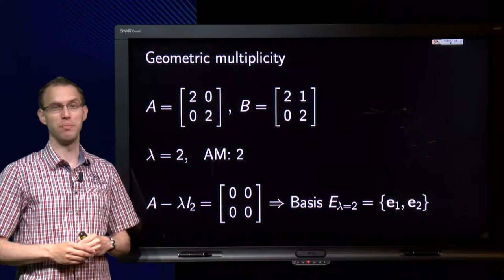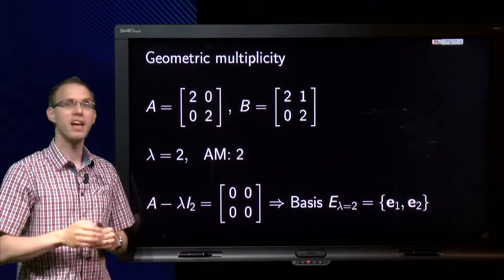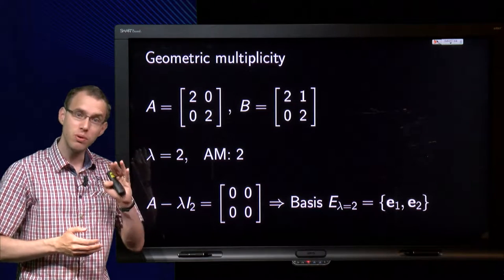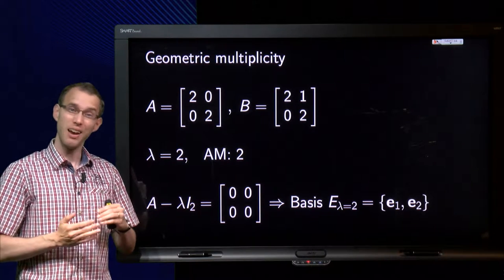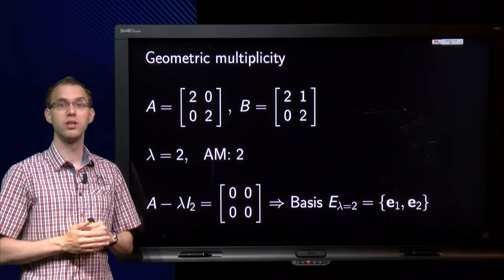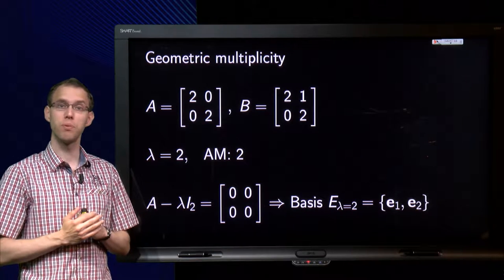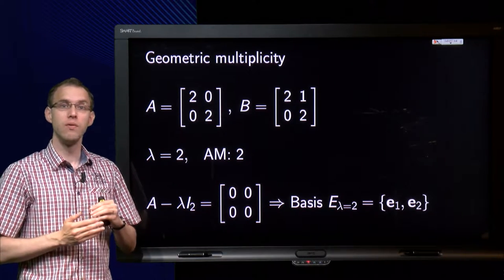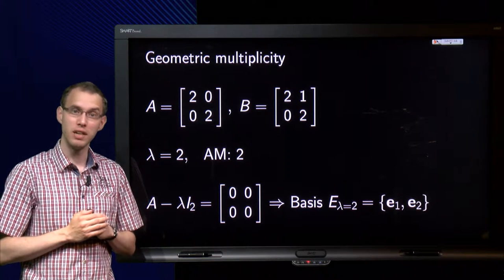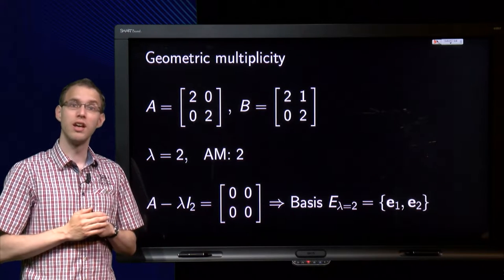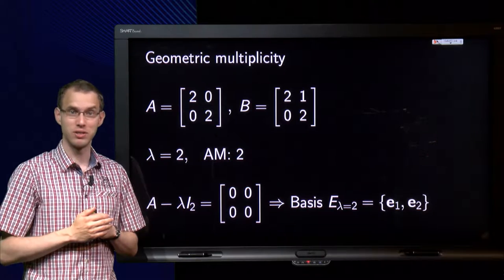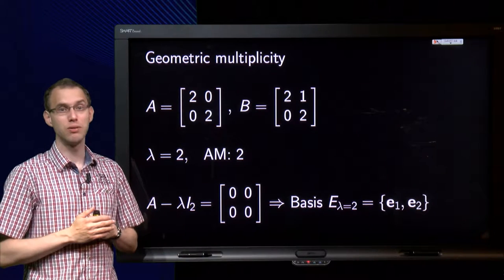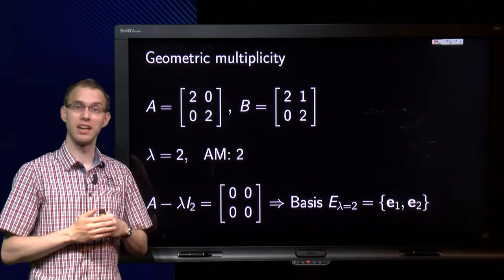Can we diagonalise every matrix? We may have complex eigenvalues, so in that case a matrix will not be real diagonalisable. But suppose we do not have complex eigenvalues. Is every n by n matrix with only real eigenvalues — so n real eigenvalues — diagonalisable? Unfortunately it is not that easy; we cannot diagonalise all matrices. We do have an easy criterion using the so-called geometric multiplicity of eigenvalues to determine whether a matrix is diagonalisable or not.